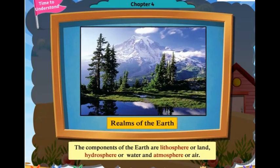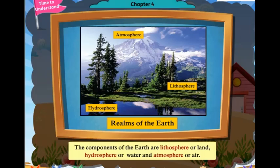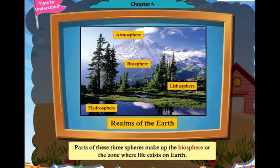The components of the Earth are the Lithosphere or Land, Hydrosphere or Water, and Atmosphere or Air. Parts of these three spheres make up the Biosphere, or the zone where life exists on Earth.